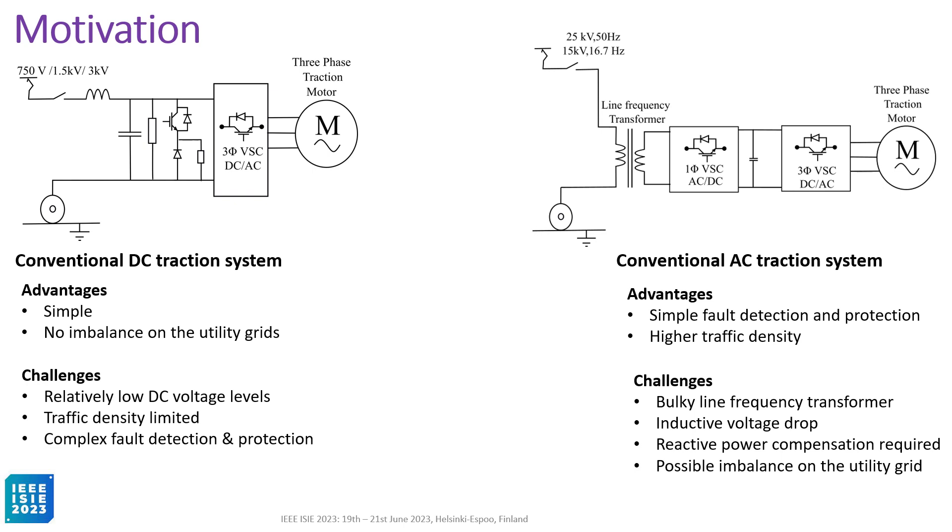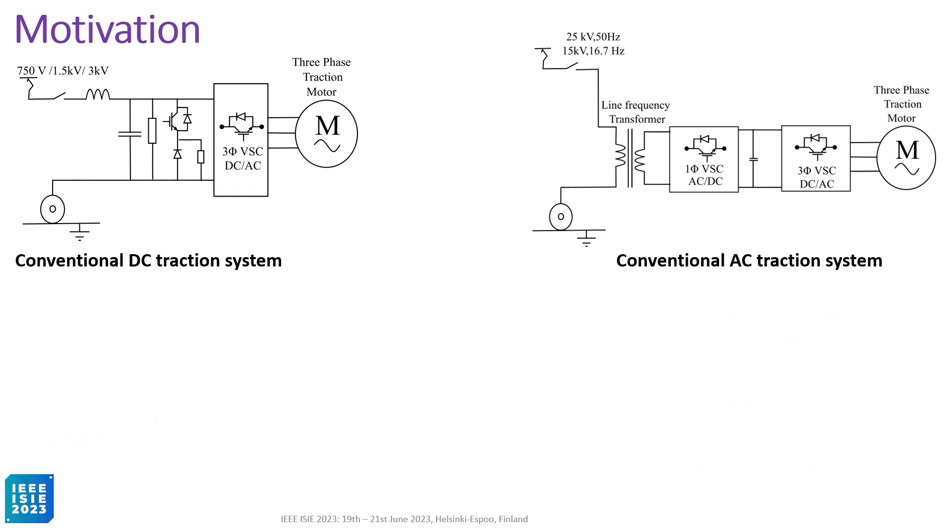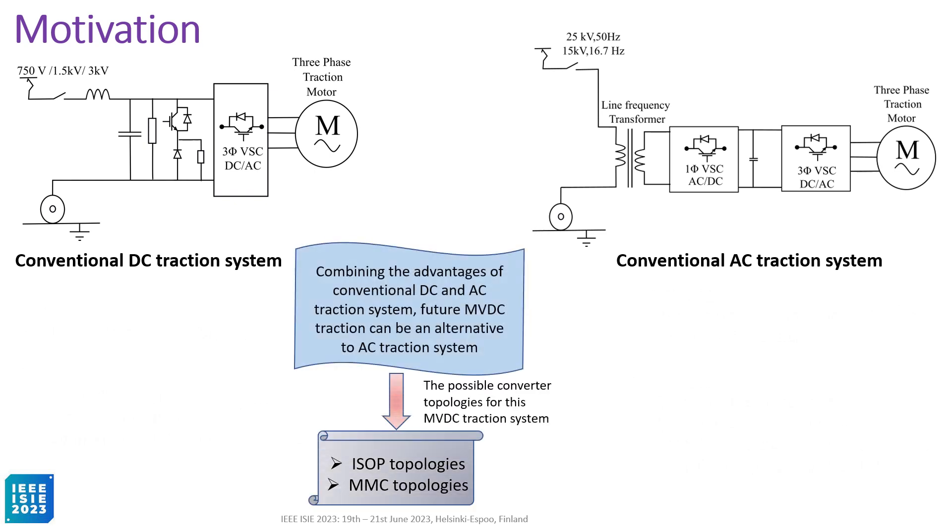So, combining the advantages of both conventional DC and AC traction systems, the DC traction system of higher voltage level can be an alternative solution to the conventional MVAC traction system. For this future MVDC system, the possible topologies are input series output parallel topologies and MMC topologies.